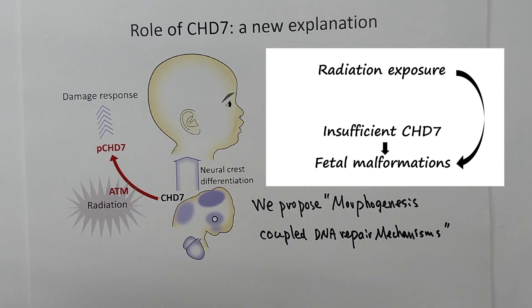If we imagine that CHD7 shortage occurs by fetal radiation due to protein's DSB response, we may explain the cause of radiation-induced malformations. Therefore, these mechanisms also lead to the understanding of malformations caused by fetal radiation exposure.